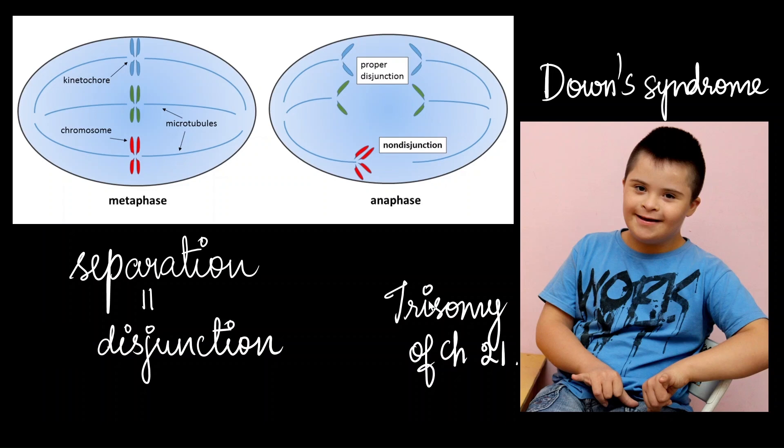Down syndrome is a disease that is associated with developmental delays, intellectual disability, and distinct physical features.